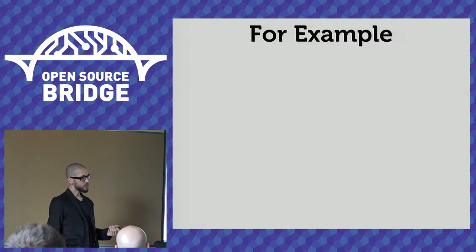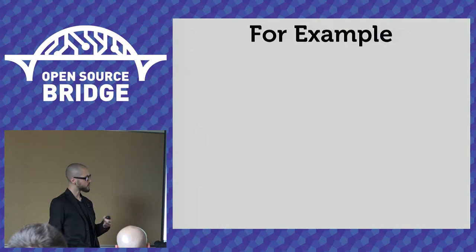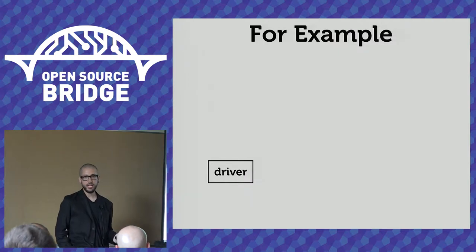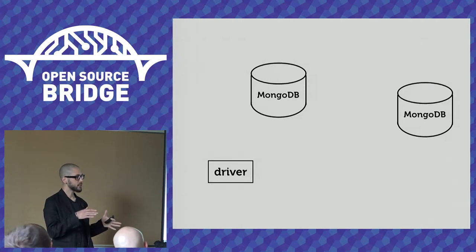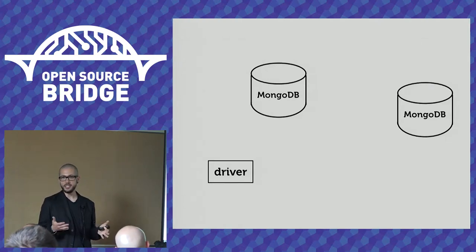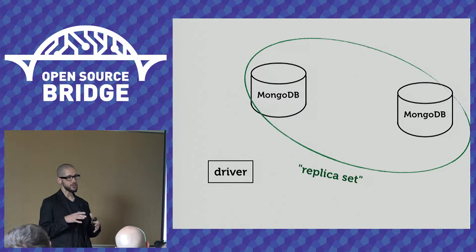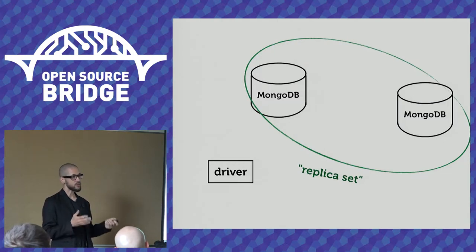I'm going to give you an example of a particular MongoDB feature that every driver has implemented, but where many came up with two different interpretations. Let's say you have a driver running on some computer on the network and you have two MongoDB servers. You can deploy MongoDB servers as a set of cooperating servers called a replica set — they have a shared replicated copy of the data, meaning you can read from either and balance your query load.